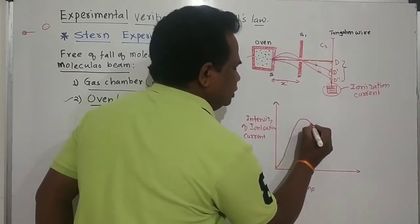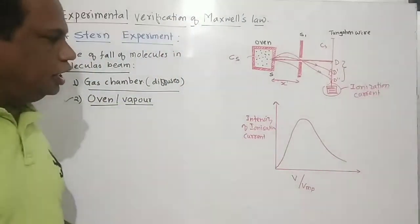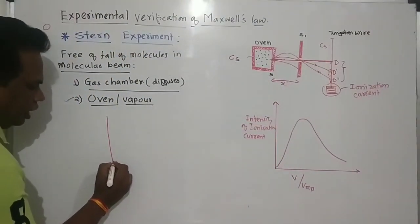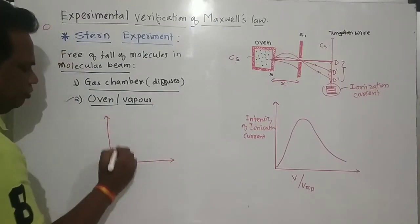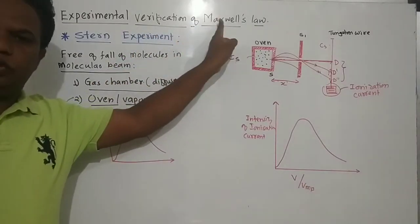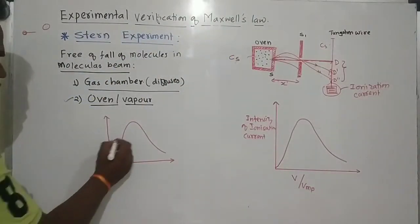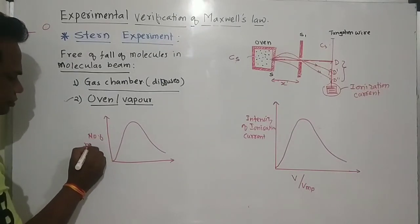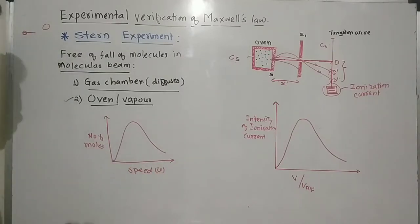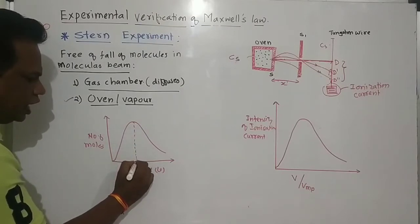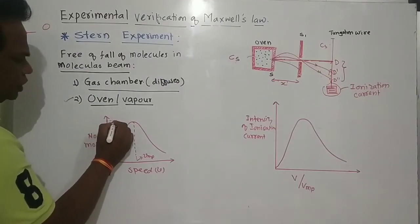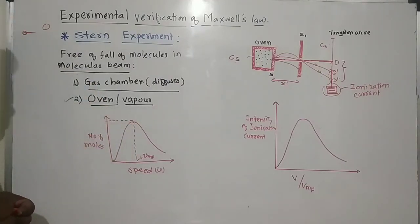This graph comes out to be similar to the graph of Maxwell's distribution of velocities of gas molecules. In Maxwell's law, we plot number of molecules versus speed V, where the maximum number of molecules have the most probable velocity Vmp.